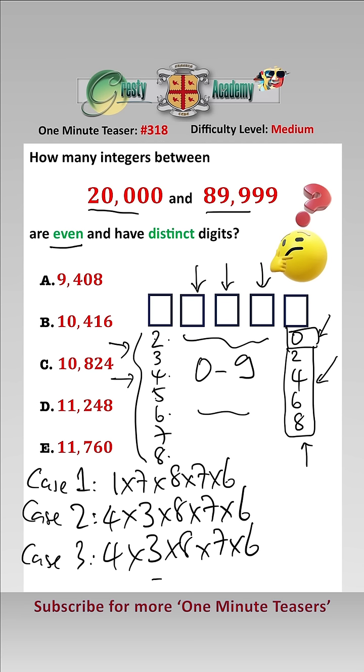Summing all of this up, that gives us 12 add 12 add 7, times 8, times 7, times 6, which equals 10,416, which is answer B.